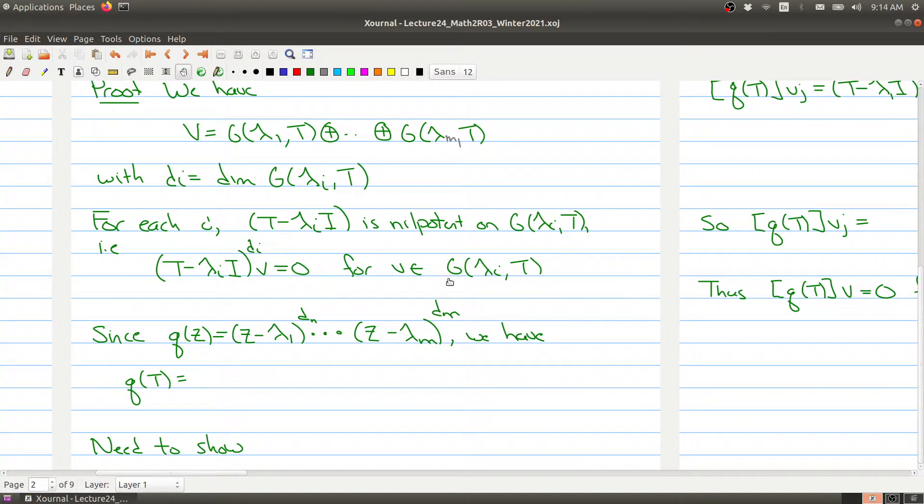The characteristic polynomial was defined in this particular form. When we plug in our operator, we get the new operator (T - λ₁I)^d₁ and so on all the way through. We're making the operator associated to this polynomial, and notice that it's made up of a whole bunch of nilpotent operators.